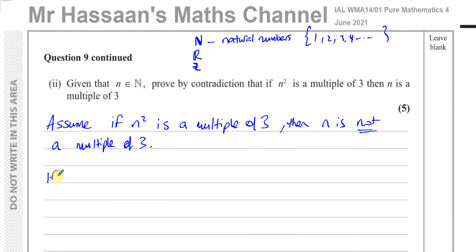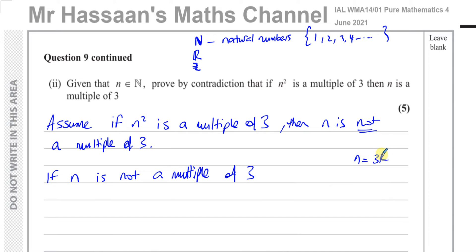We need to express n as being not a multiple of three. If n were a multiple of three you could write n = 3k for some constant. Since we want it not to be a multiple of three, dividing by three must leave a remainder. When you divide any number by three, it either divides exactly (multiple of three), or you get a remainder of one, or a remainder of two.